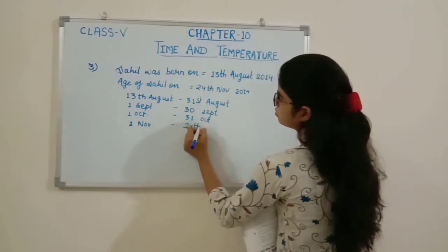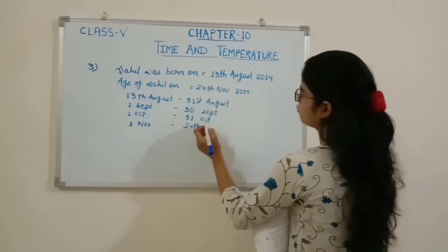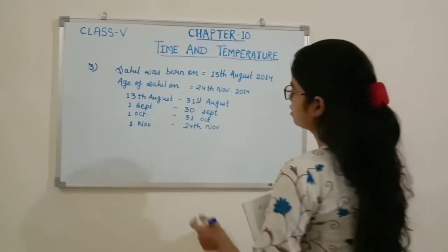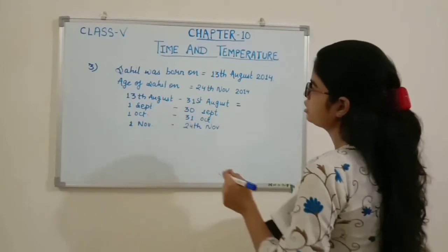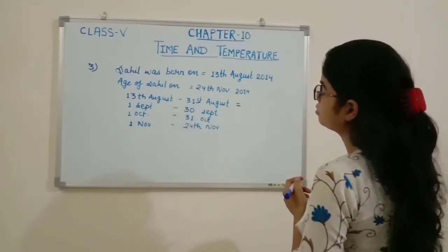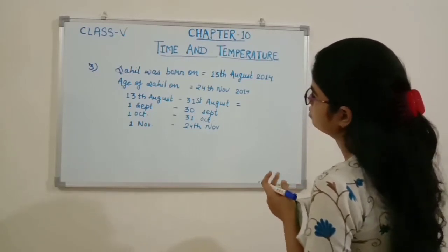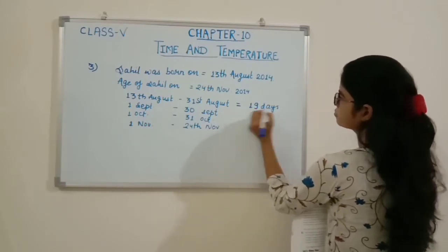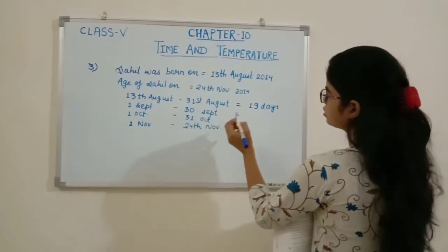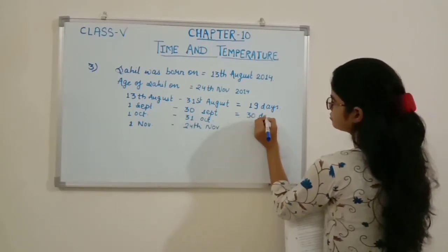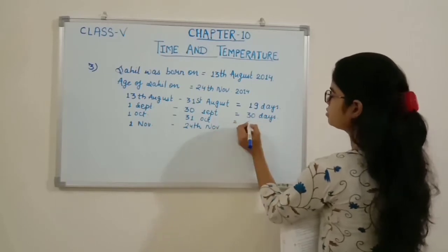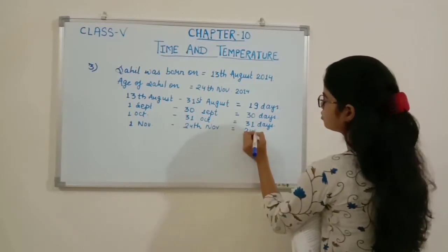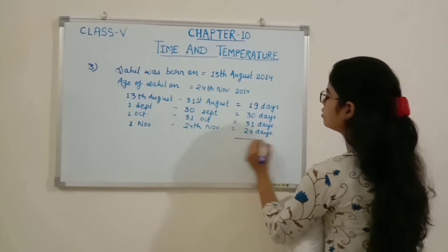We have to find the age of Sahin on 24th of November. From 13th of August to 31st of August there are 19 days. From 1st September to 30th September there are 30 days. Similarly there are 31 days in October, and up to 24th of November there are 24 days.